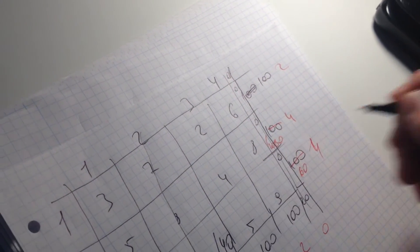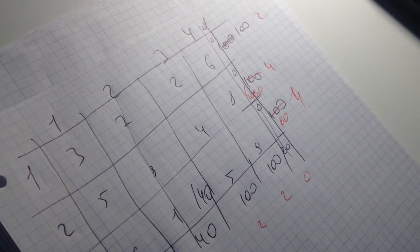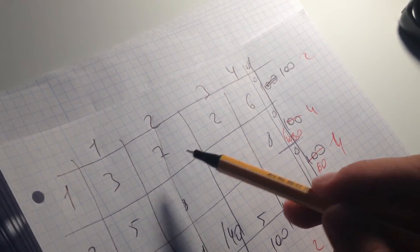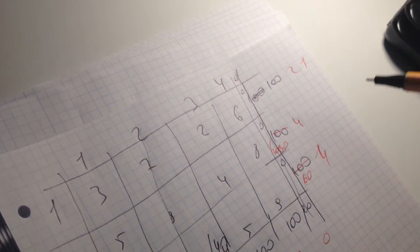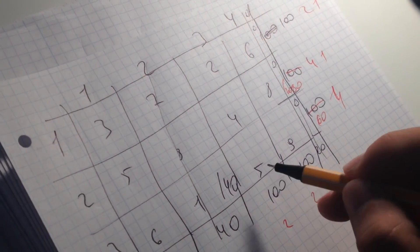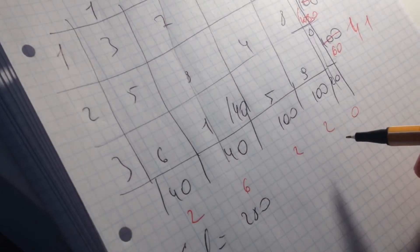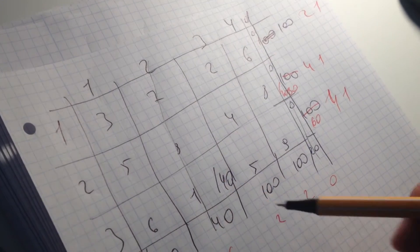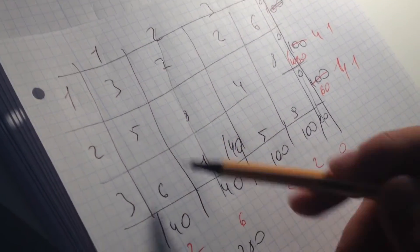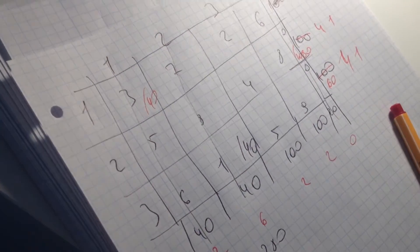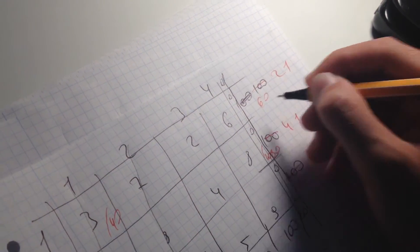We still have 80 goods to transport. Now the opportunity costs are: 1 (since 3 minus 2 is 1), and also 1, 1, 2, 2, and 2. We can use any of these columns. I'm going to use this one and assign 40 units. This customer is now satisfied; we still have 60 goods remaining.